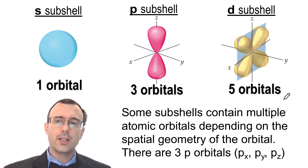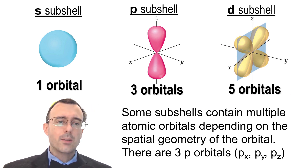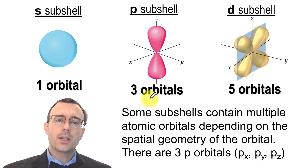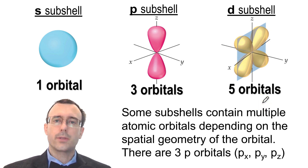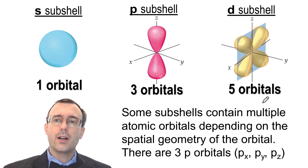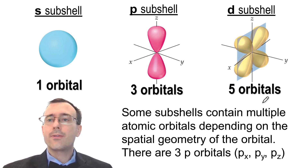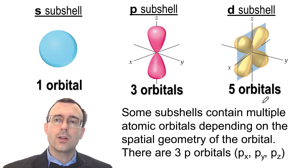Subshells also have a different number of orbitals in them. The s subshell has only one orbital. The p subshell has three orbitals. The d subshell has five orbitals. We can see a pattern: 1, 3, 5 — these are all odd numbers. So you can predict that the f subshell has seven orbitals, the g has nine, etc. Since f comes after d, we know there are seven orbitals in the f subshell.